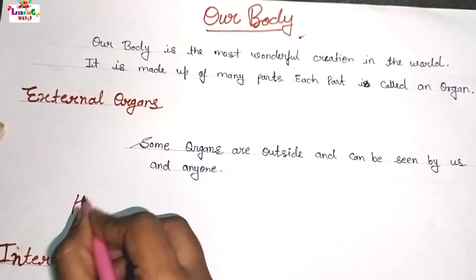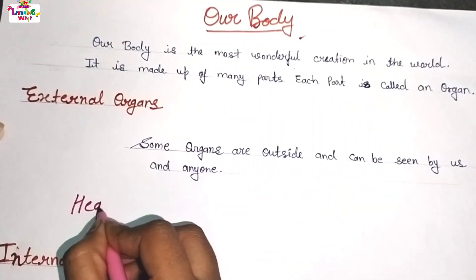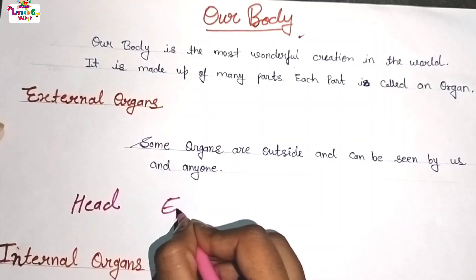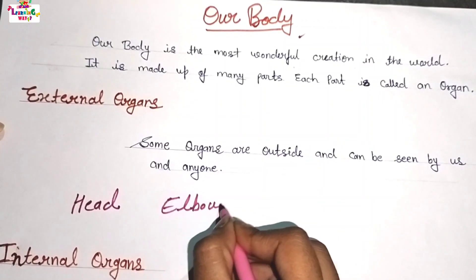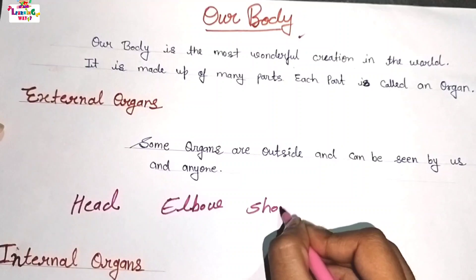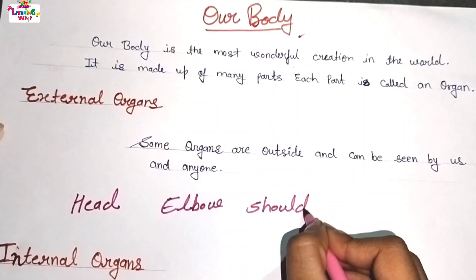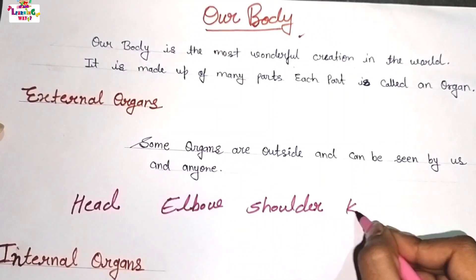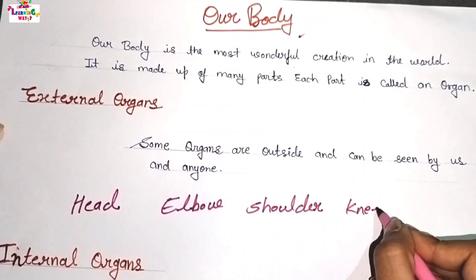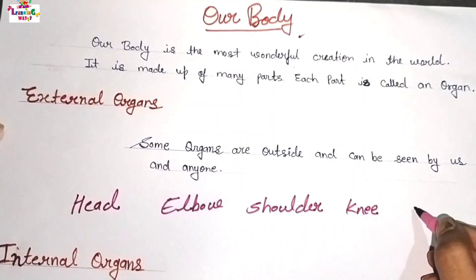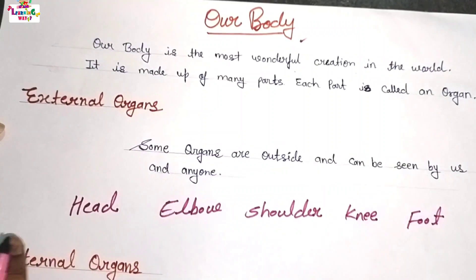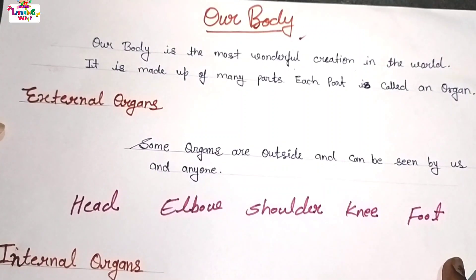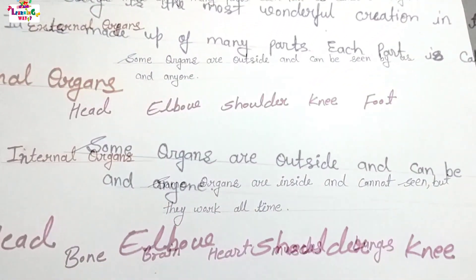For example: head, elbow, shoulder, knee, foot. Yeh saare organs external organs hain — jo humhein dikhai daytay hain.